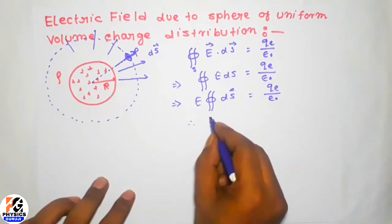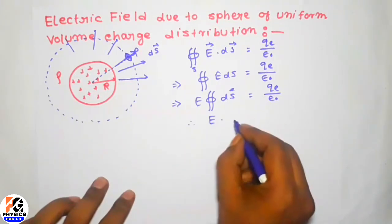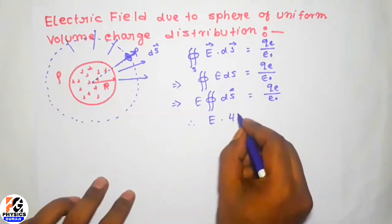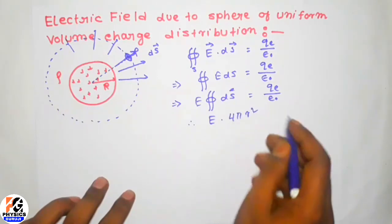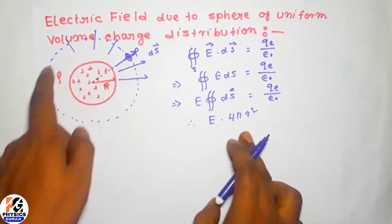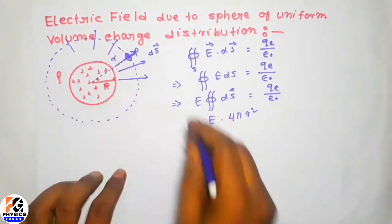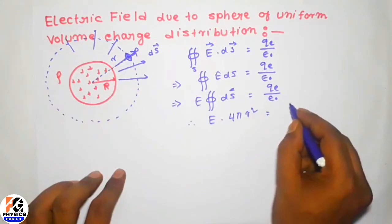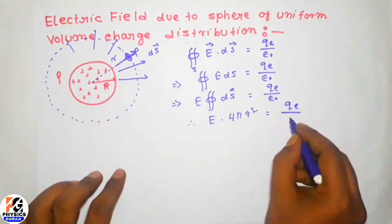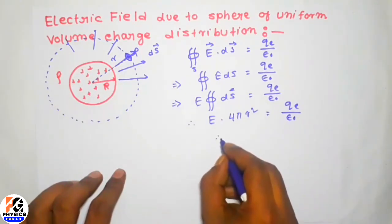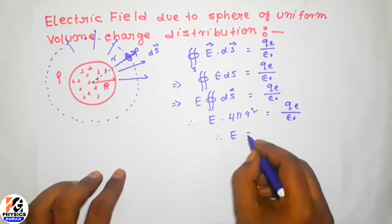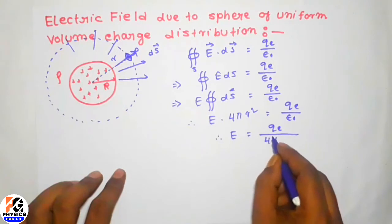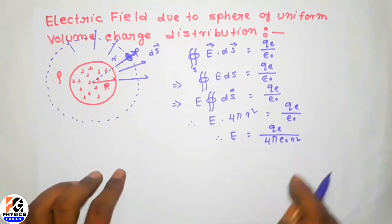Therefore we can write E times 4π r² — since the surface integral of dS equals 4π r², which is the surface area of a sphere of radius r — equals Q over epsilon-zero. Therefore E equals 1 over 4π epsilon-zero times Q over r².